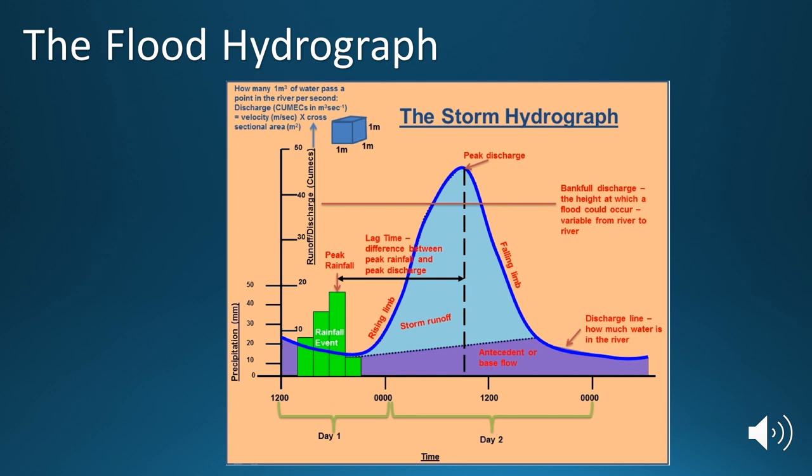So we get a rainfall event in light green using the bars. And if we move to the line graph, we can see that corresponds with an increase a couple of hours later in river discharge within the river system, the river channel itself. Now, this increase we call the rising limb. So the rising limb is the word we use to describe the increase in river discharge you see on the storm hydrograph.